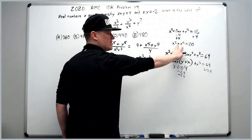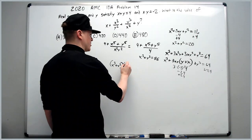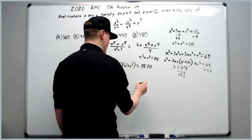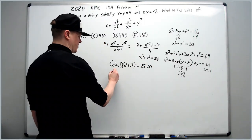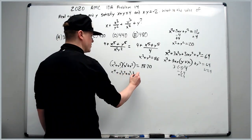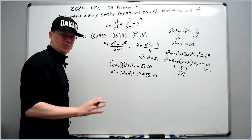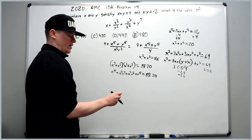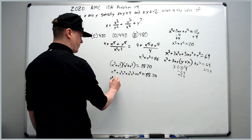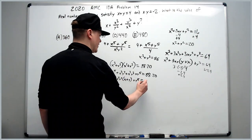Now multiply x cubed plus y cubed by x squared plus y squared: 88 times 20. Distributing gives x to the fifth plus x cubed y squared plus x squared y cubed plus y to the fifth equals 1760. Factor out x squared y squared from the middle terms: x to the fifth plus x squared y squared times (x plus y) plus y to the fifth equals 1760.